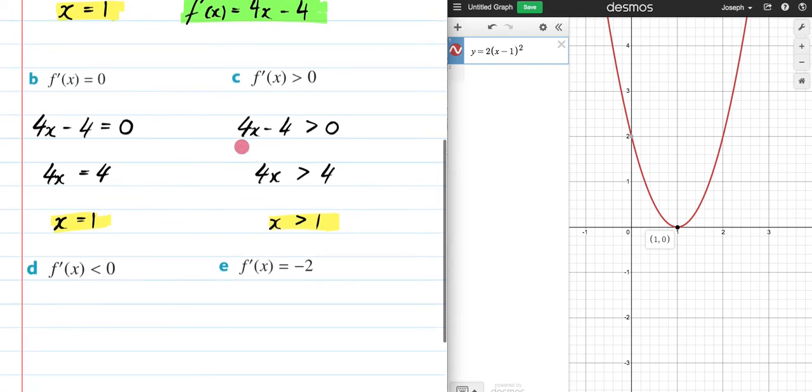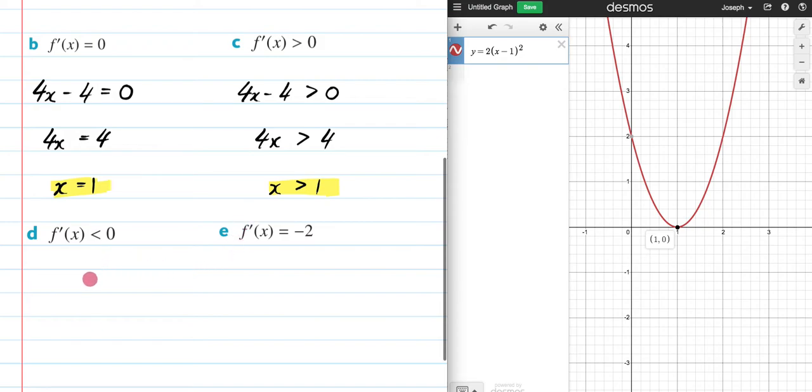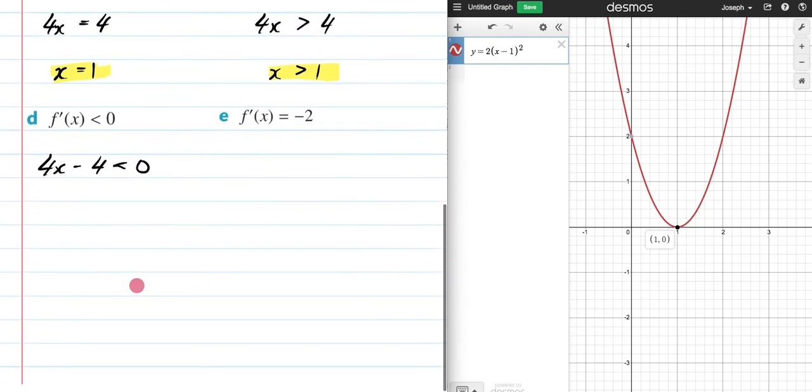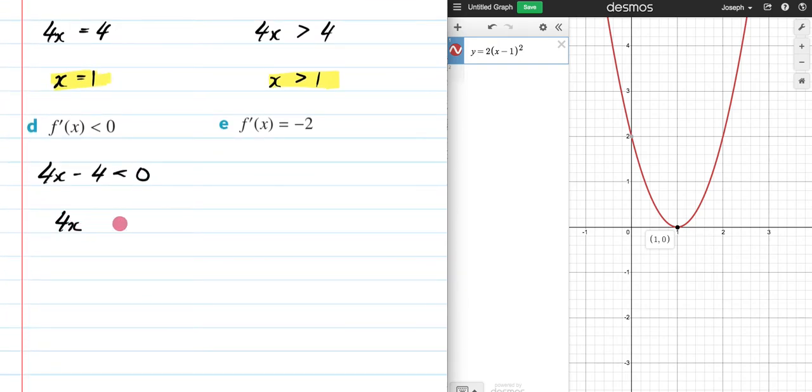And then, I'm sorry, not finally. We still have two more questions. I'm getting ahead of myself. So now it's less than 0. So this is going to be 4x - 4 < 0, which gives us x < 1.